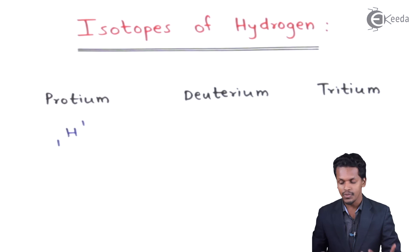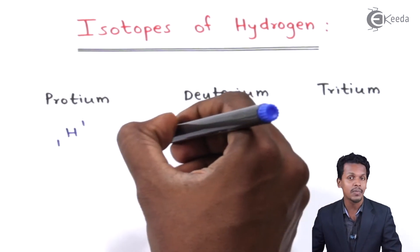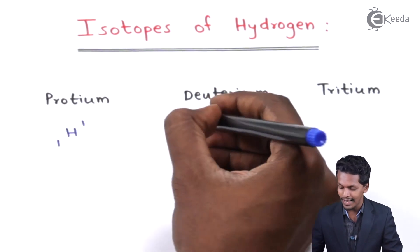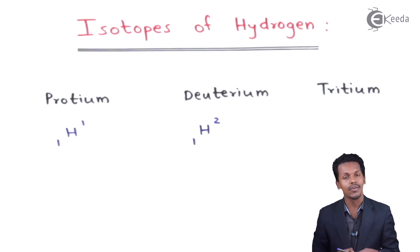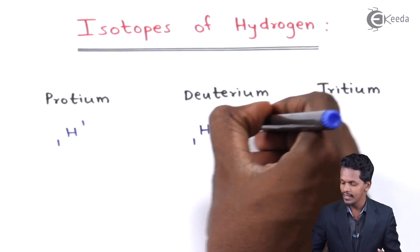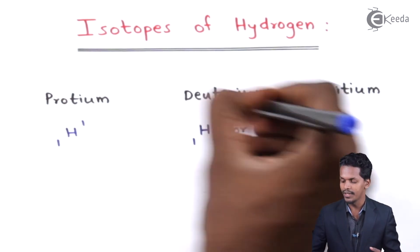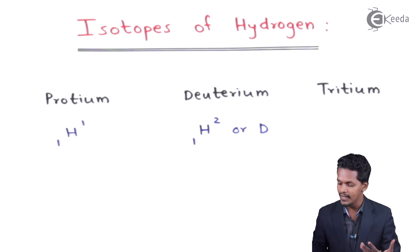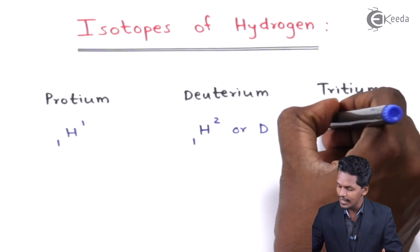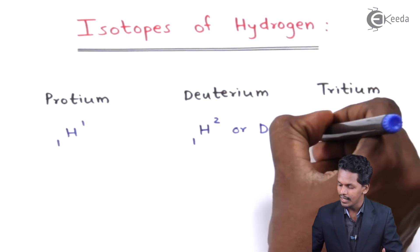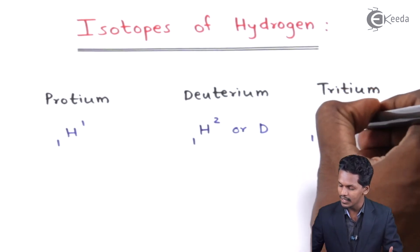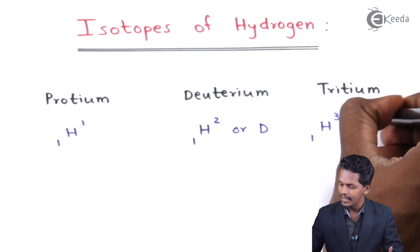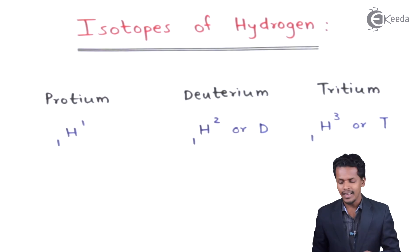Deuterium is represented by D, or written as ¹₂H, with an atomic mass number of 2. Tritium has an atomic number of 1 but an atomic mass number of 3, and is represented by the symbol T. These are the three isotopes of hydrogen.